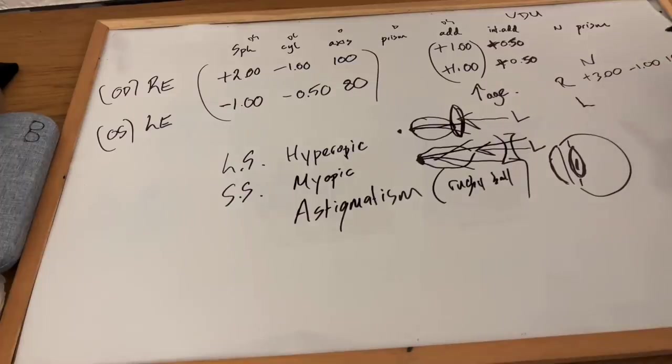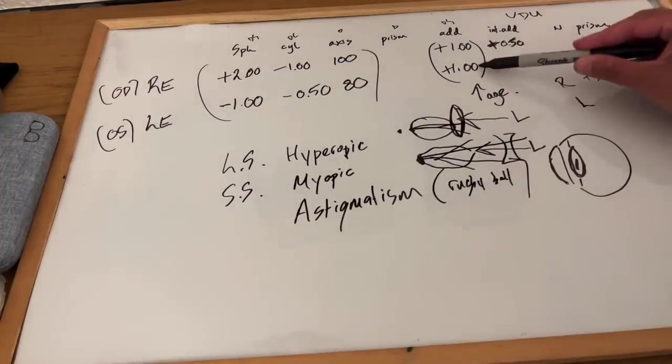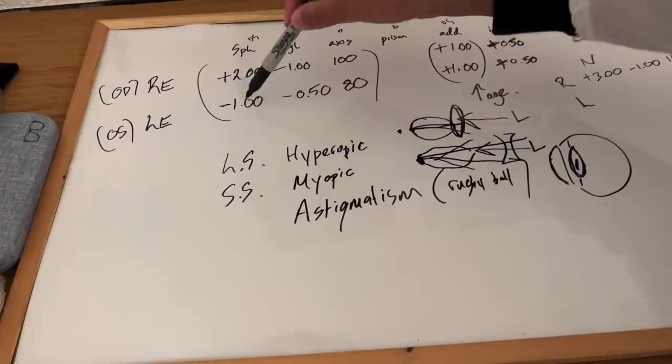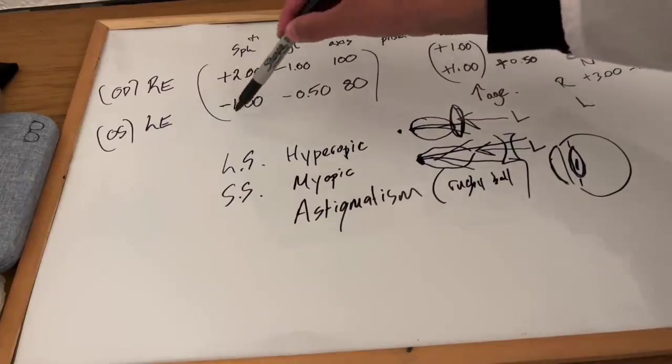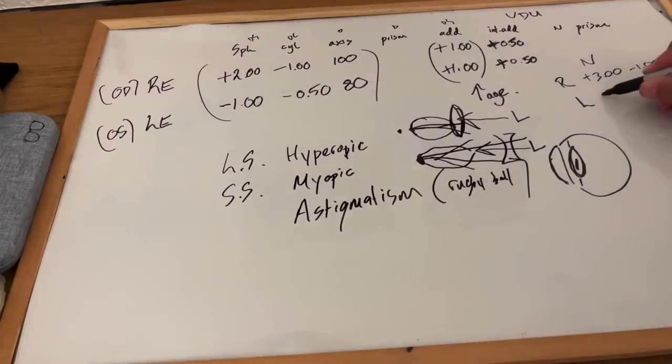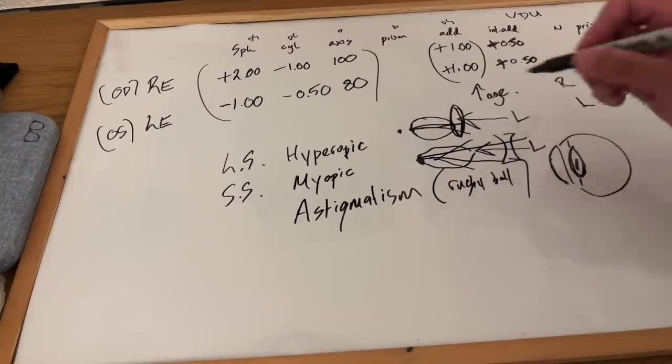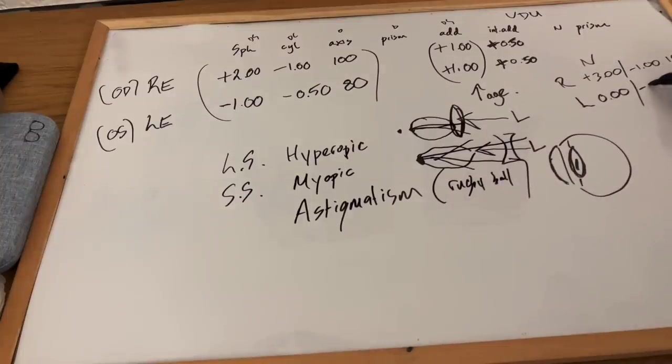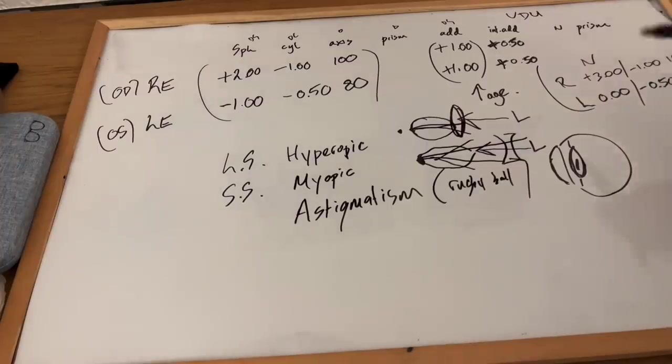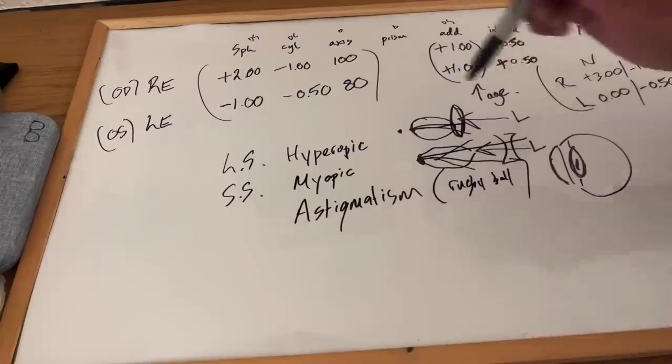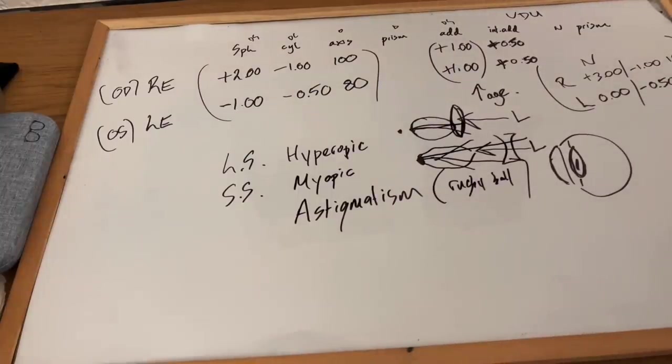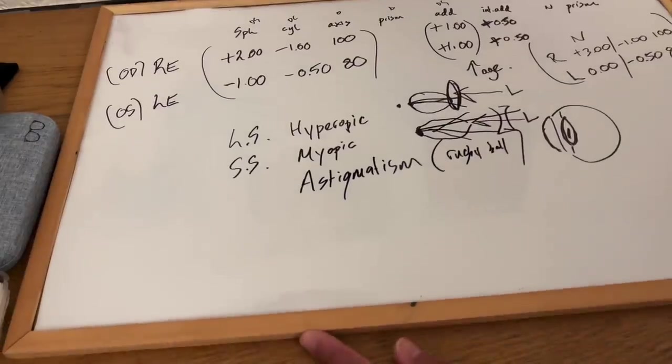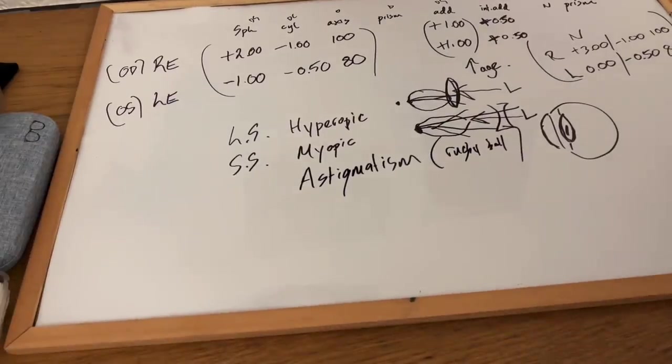For the left eye near vision prescription, plus one, add it to the minus one spherical element, that becomes plano, zero. Cylinder remains the same, and that is your near vision prescription based on these values here. Lovely, so that in a nutshell is your prescription.